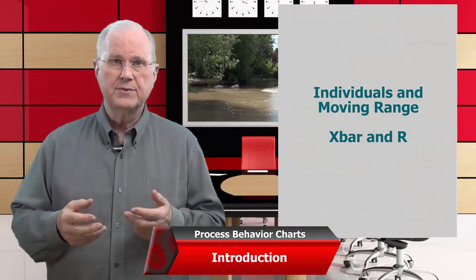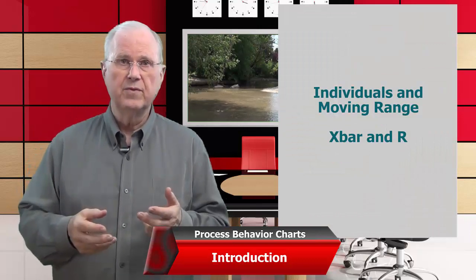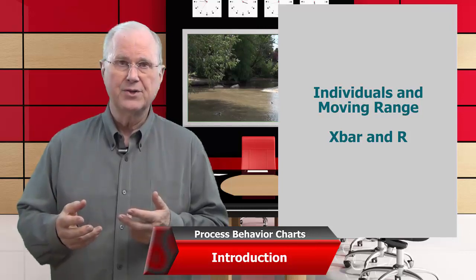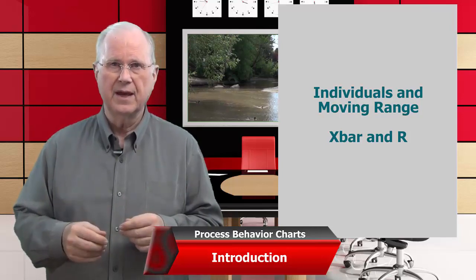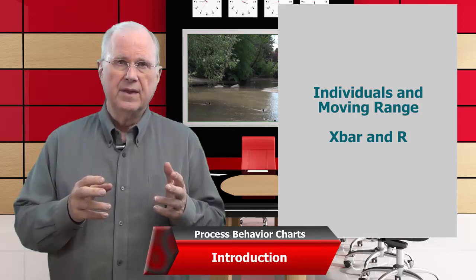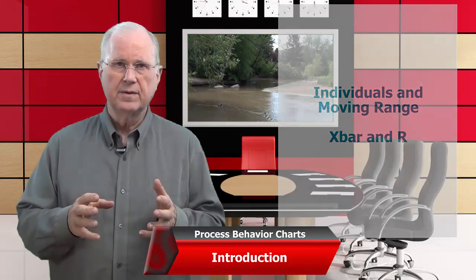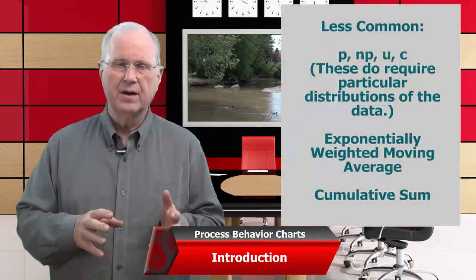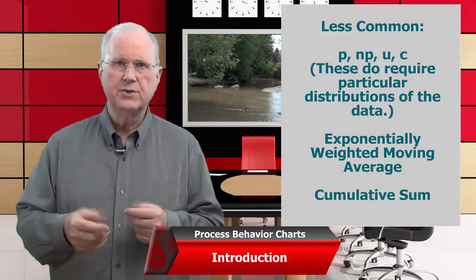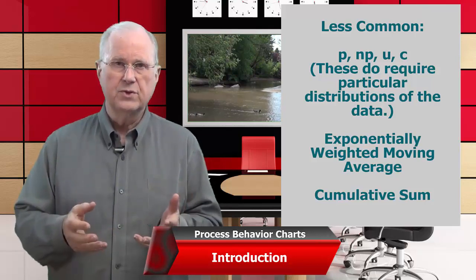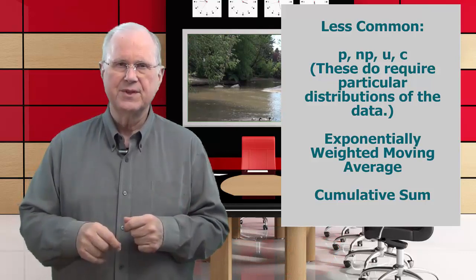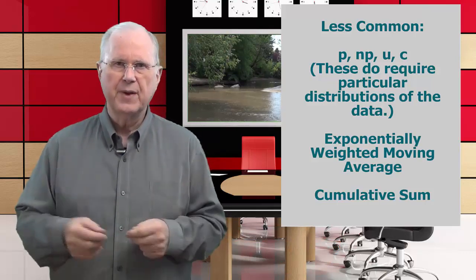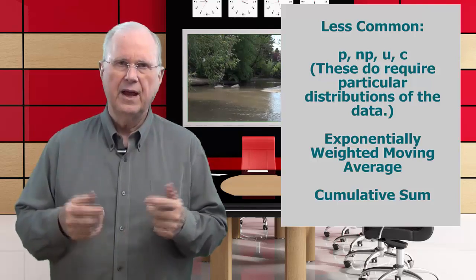The two important types of charts we're going to study are the Individuals and Moving Range Chart and the X-Bar and R Chart, maybe with a little mention of the X-Bar and S, which is less common and a lot like the X-Bar and R. The less commonly used charts that we're not going to talk about include the P-Chart, the NP-Chart, the C-Chart, and the U-Chart — those do require particular distributions of the data. A couple of other specialty items we're not going to spend much time on are Exponentially Weighted Moving Average Charts and Cumulative Sum Charts, which you hardly ever see anymore.